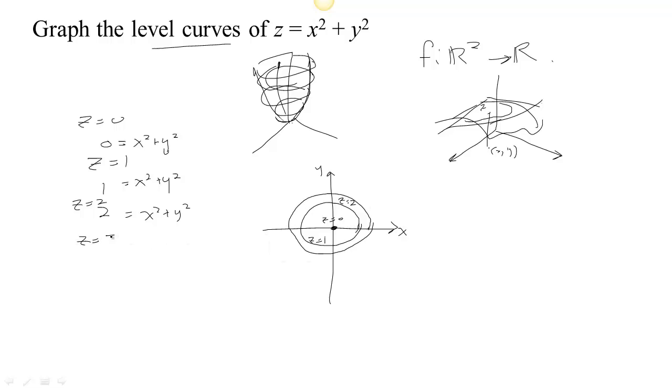If we set z equal to three, then we have three equal x squared plus y squared. It's a circle of radius root three, and it's about 1.7. So if we set z equal to four, maybe I'll just do one last one. We get four equals x squared plus y squared. That's a circle of radius two. So getting closer and closer together.